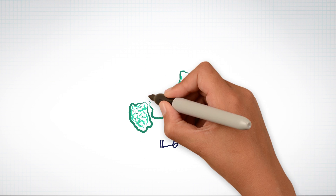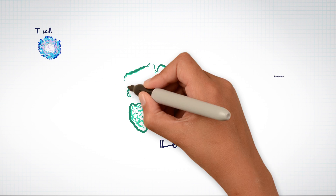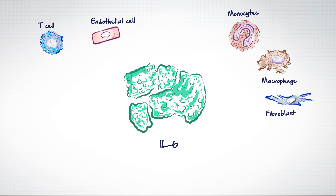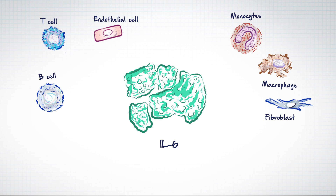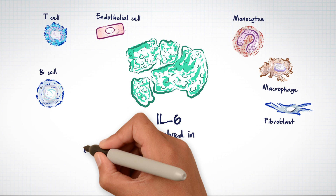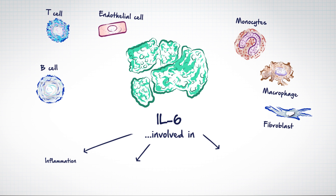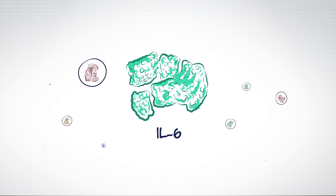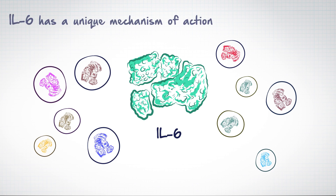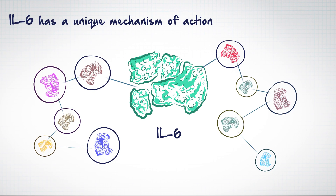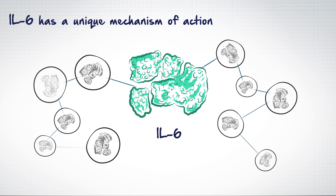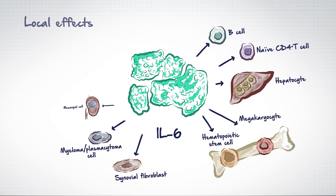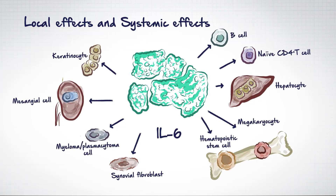Among these cytokines, interleukin-6, or IL-6, is considered particularly important as it is produced by multiple cell types and is involved in a wide range of biologic functions in the body, including inflammation, immunoregulation, and hematopoiesis. IL-6's unique mechanism of action accounts for it being considered a pivotal cytokine in the pathogenesis of autoimmune diseases, driving both the local and systemic effects of these conditions.